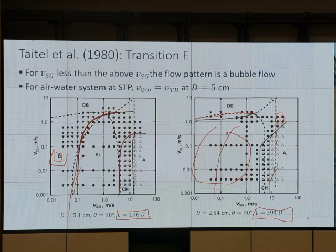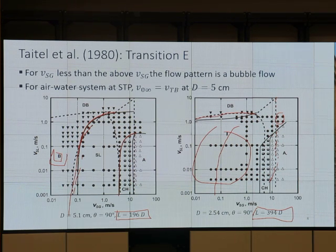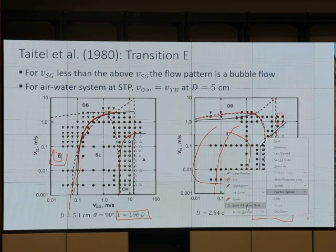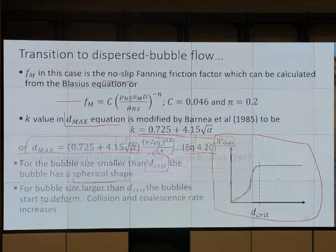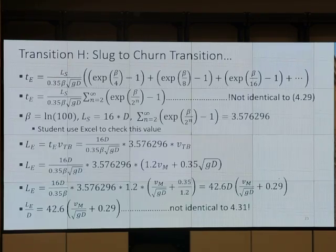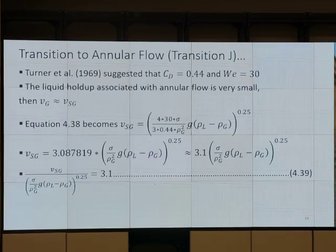Annular flow or not annular flow is very important — it tells us whether we're going to have liquid loading in the well. Transition J is at the boundary. Transition H is that line, and that is Transition J. There are some derivations we will go through. Now you know how to use Transition J and Transition H, even though we skipped the derivation.